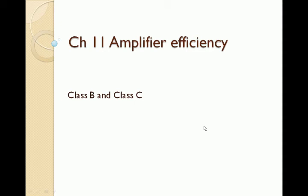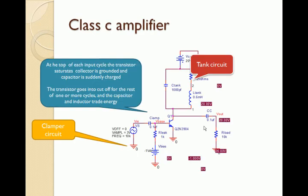Chapter 11: Amplifier efficiency for Class B and Class C. In the Class C amplifier, there is a clamper circuit at the base terminal and a tank circuit on the collector. The input signal causes the transistor to saturate, the collector is grounded, and the capacitor is suddenly charged. The transistor then goes into cutoff for the rest of one or more cycles, and the capacitor and inductor trade energy. The output is taken from the collector as usual.